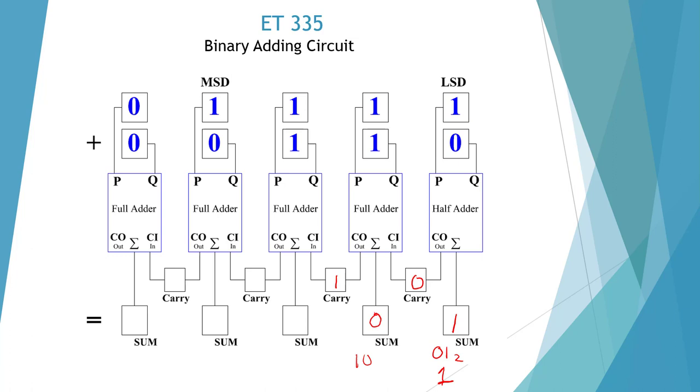Here we have our carry input. We have 1 plus 1 plus 1, which is 1 carry 1. 11 base 2 is 3 decimal. Then we take our carry in, 1 plus 1 plus 0 is 0 sum, carry 1. 10 base 2 is 2.